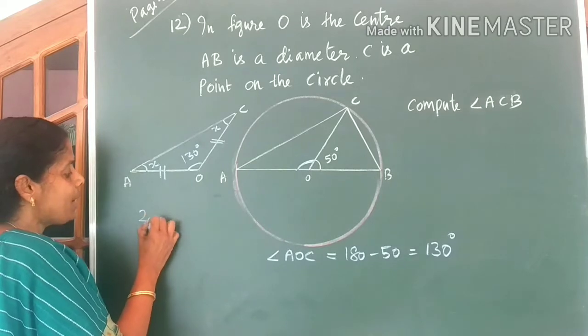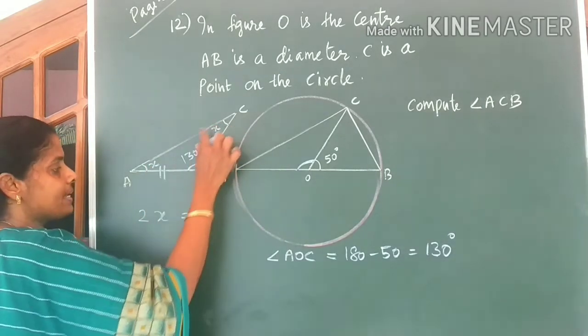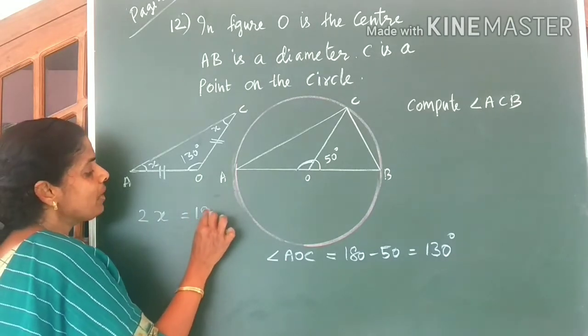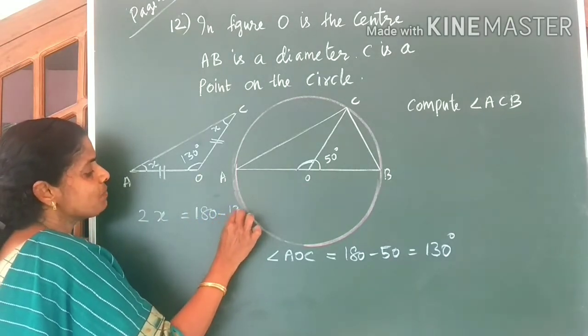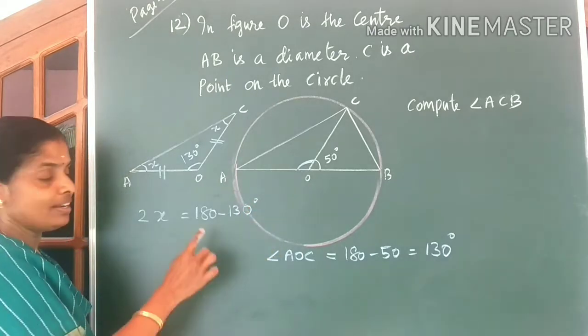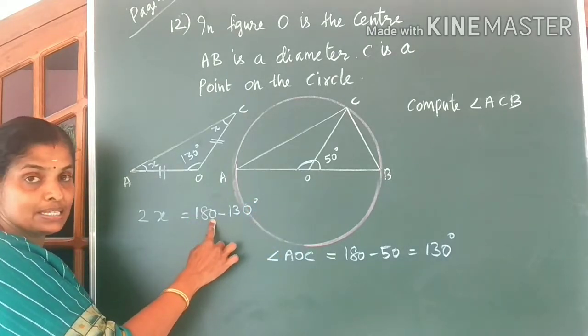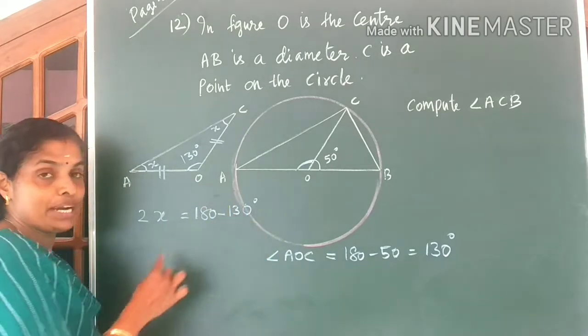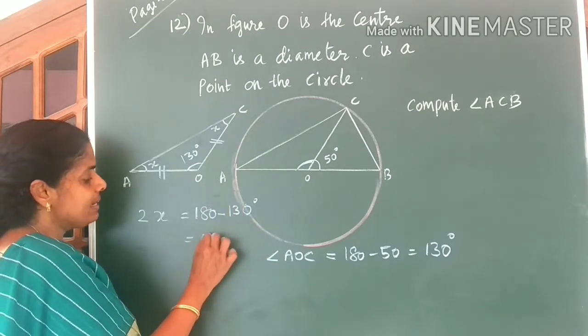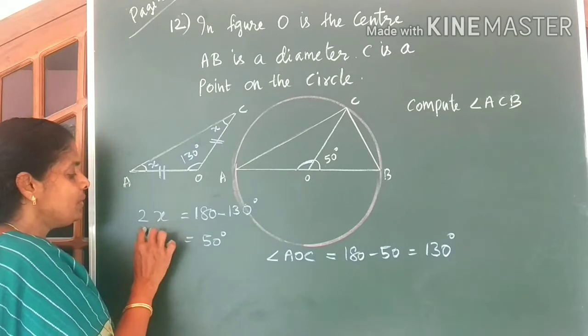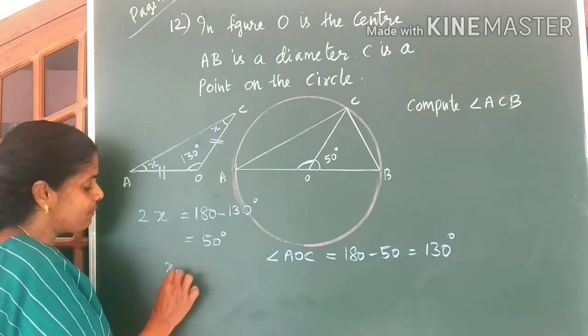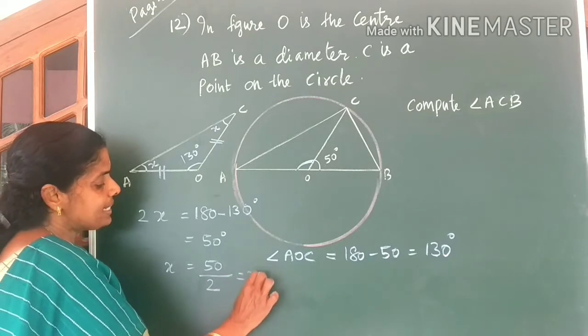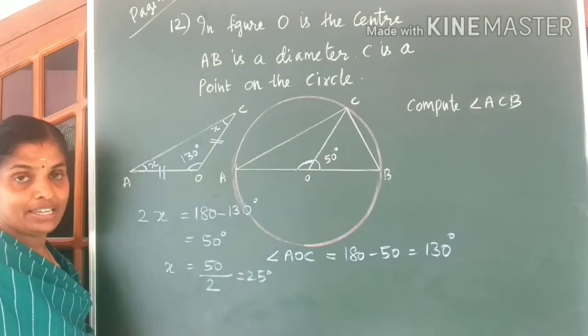So what can you say about 2X? X plus X gives you 2X. 2X is equal to 180 minus 130 degrees. 180 degrees is the sum of all angles of a triangle from which I have subtracted 130. This gives you 50 degrees. So X is 50 degrees. Therefore X is equal to 50 divided by 2, that is equal to 25 degrees. Clear?